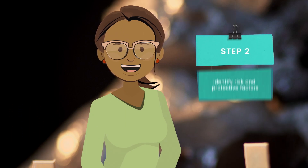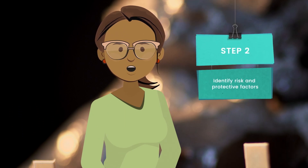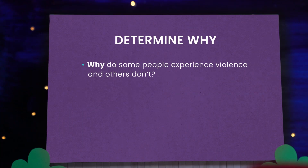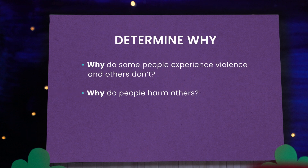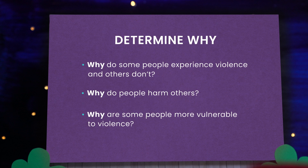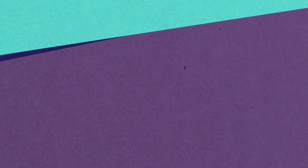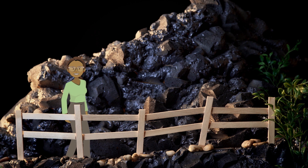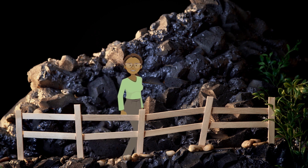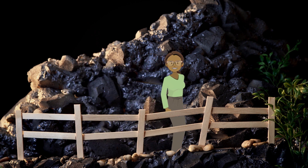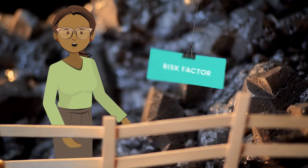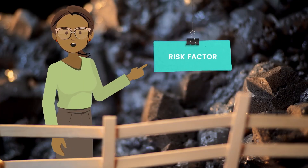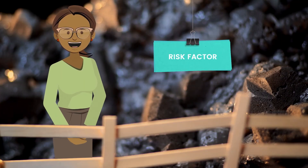Step two of the public health approach helps to answer the question why. Why does one person experience violence while another does not? Why does someone harm another person? Why are some communities more vulnerable to violence than others? During the second step, you will identify risk and protective factors, which help us determine where prevention efforts need to be focused. A risk factor increases the likelihood that someone will experience violence. However, just because a risk factor is present does not mean a person will definitely experience violence.